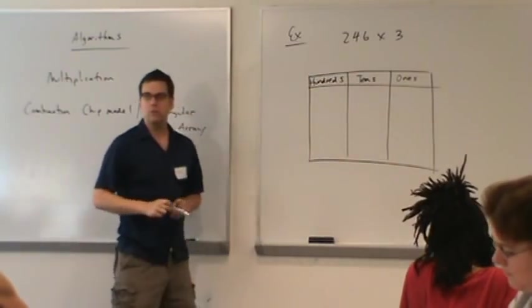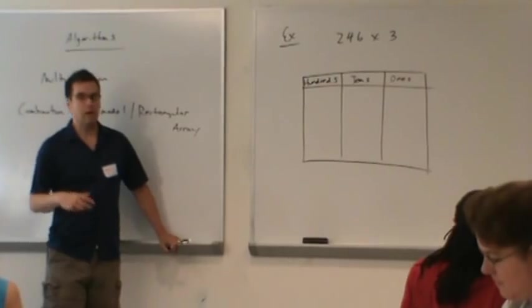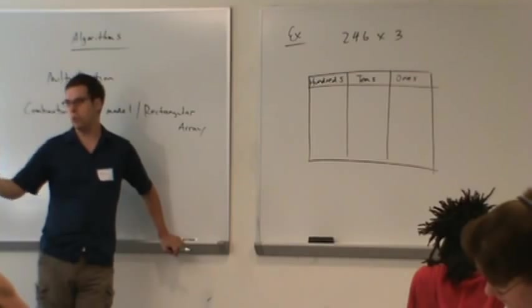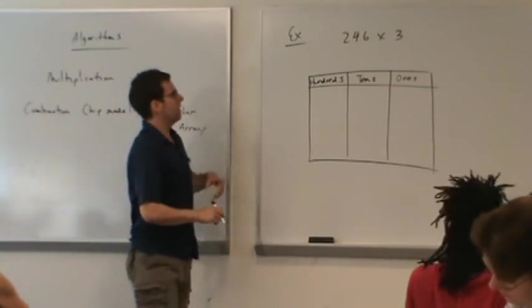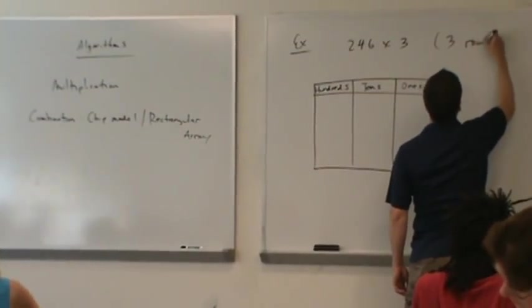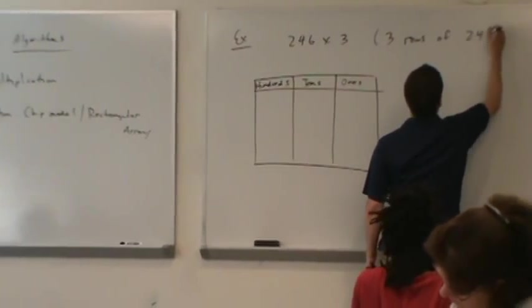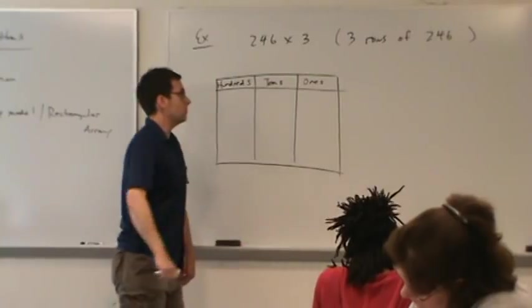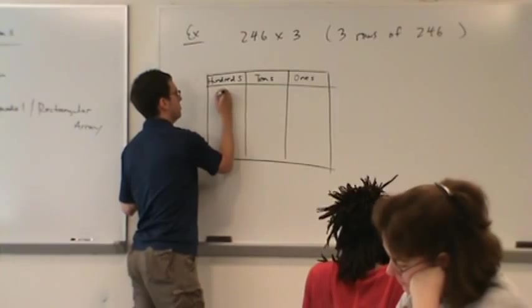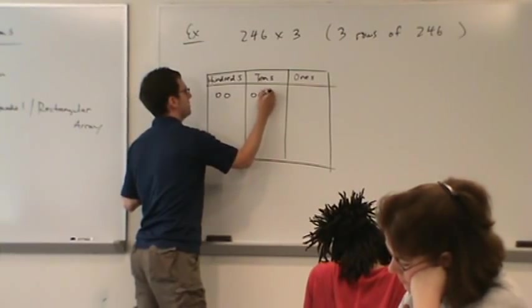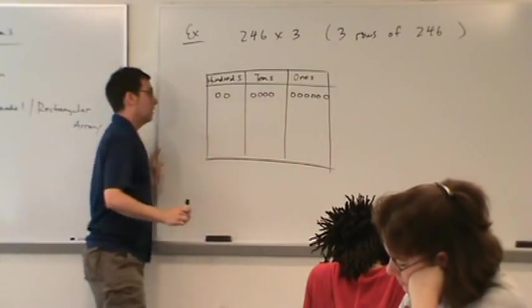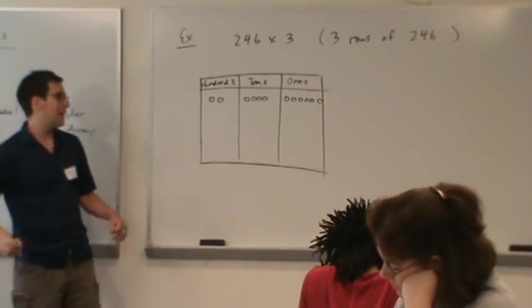We're using this new idea that multiplication by 3 is exactly the same as three rows of 246. So we are thinking of 246 times 3 as three rows of 246. That's exactly what we did yesterday with that base 5 problem. 246 is 200, 4 tens, and 6 ones, and we're just going to have three exact rows of this.